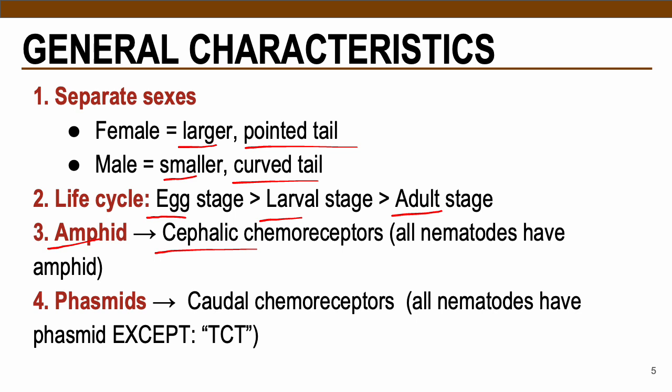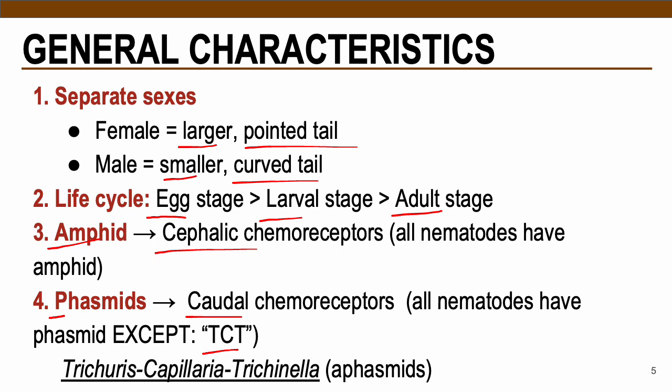Phasmids are caudal chemoreceptors located posteriorly in the adult worms. Remember: all nematodes have phasmids except for the TCT group. TCT is comprised of Trichuris, Capillaria philippinensis, and Trichinella spiralis. All nematodes have phasmids except these three, which are called aphasmids — they lack caudal chemoreceptors.